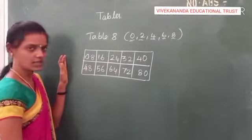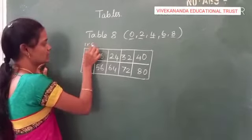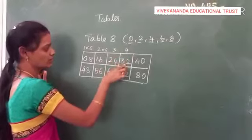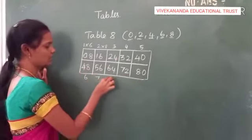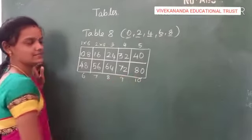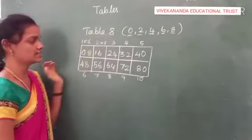So we got table 8 from this box. Let's check. 1 time 8 is 8, 2 times 8 is 16, 3 times 8 is 24, 4 times 8 is 32, 5 times 8 is 40, 6 times 8 is 48. Finally 10 times 8 is 80. So this is how we can get table 8 in an easy way.